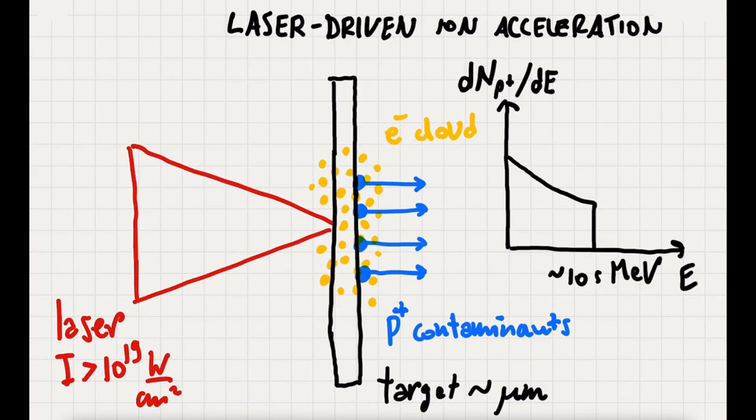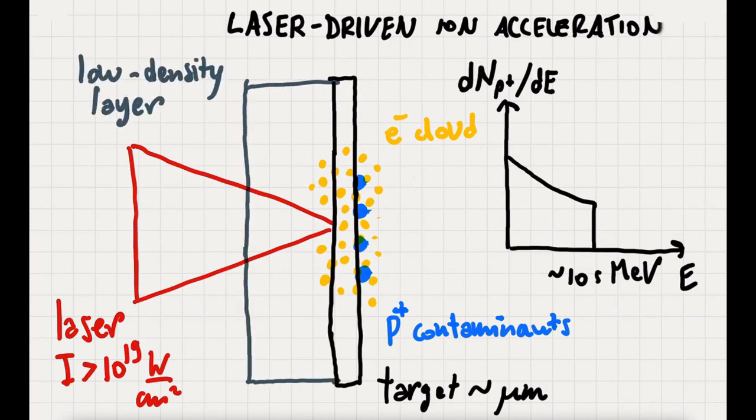However, this process is affected by a very low efficiency. We can improve the acceleration by adding an ultra-low density layer on the front side of the target in a double-layer configuration.